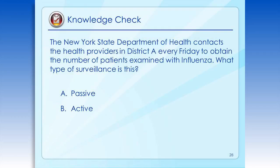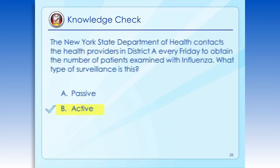Here we have another knowledge check. The New York State Department of Health contacts healthcare providers in District A every Friday to obtain the number of patients examined with influenza. What type of surveillance is this? The correct answer is B — active. What if they were to send a notice to providers at the start of the flu season reminding them to report? Or what if they were to send staff to a sample of emergency rooms to review records? Would that change the answer as well?